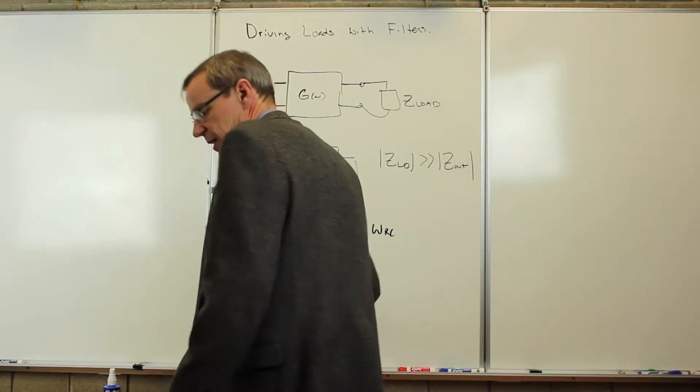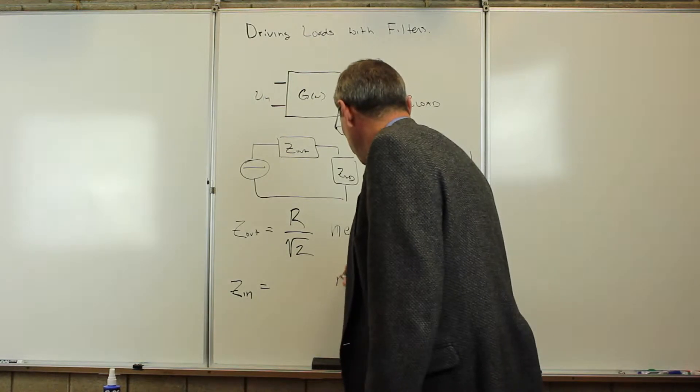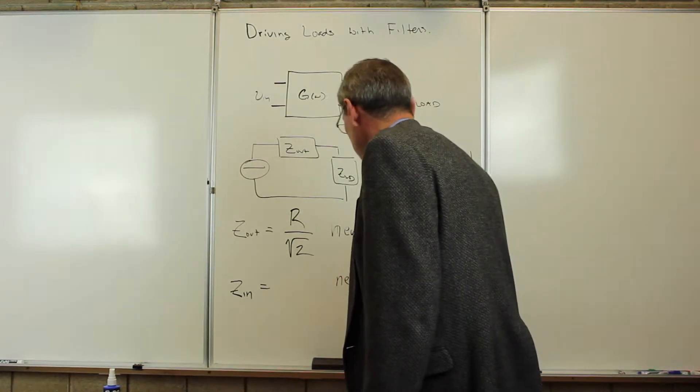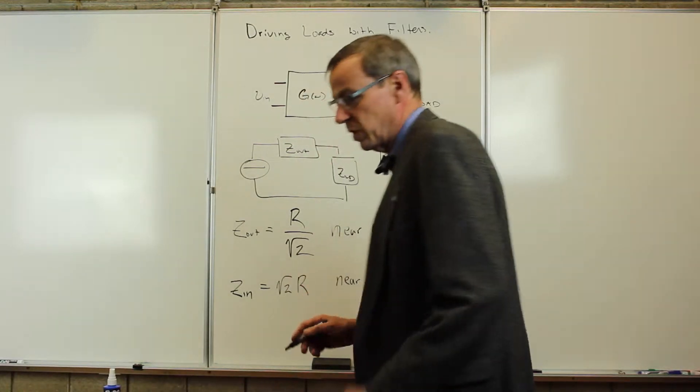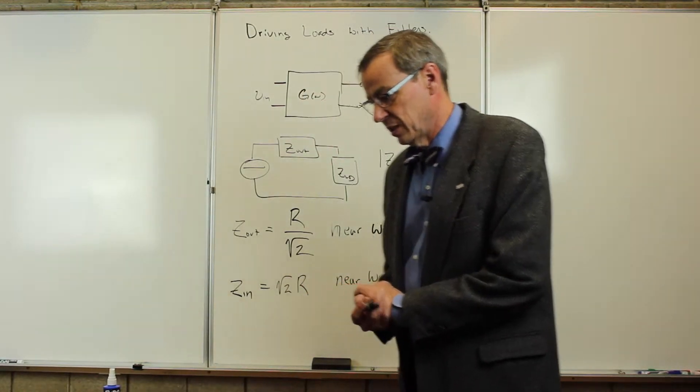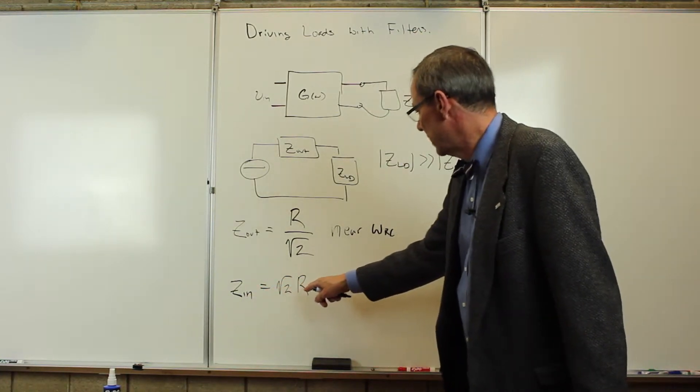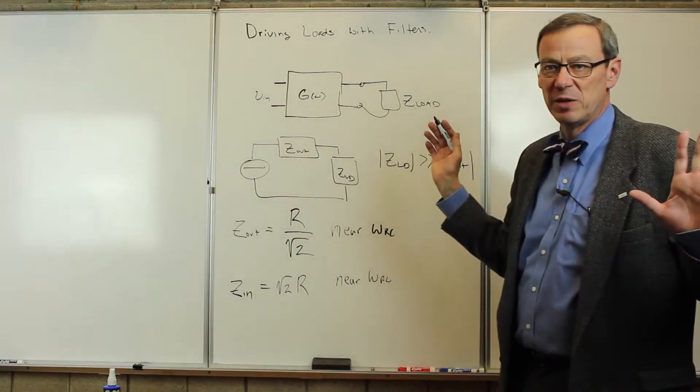So, Zin. And there we can go back and if it's an RC high-pass or low-pass filter near omega RC, Zin is close to square root of 2 times the resistance. So, this input impedance has to be large compared to the output impedance of whatever we're driving this with.